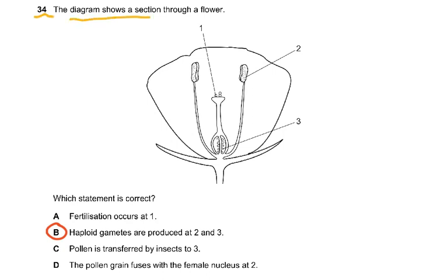Question 34: the diagram shows a section through a flower with labels 1, 2, and 3. Fertilization occurs at 1 — no, that is where pollen lands on the stigma. Haploid gametes are produced by 2 and 3 — yes, that is correct. Pollen is transferred by insects to 3 — no, pollen is transferred to 1 on the stigma. The pollen grain fuses with the female nucleus at 2 — no, 2 is the anther where male gametes (pollen grains) are produced.